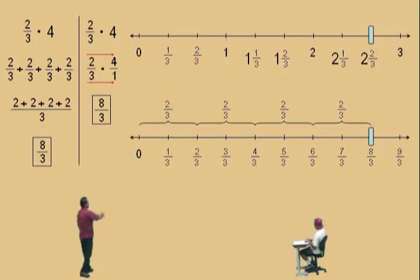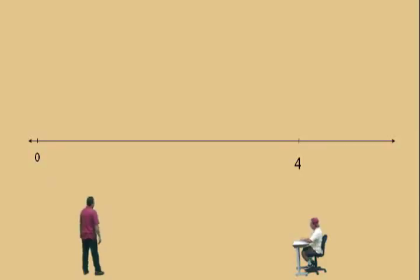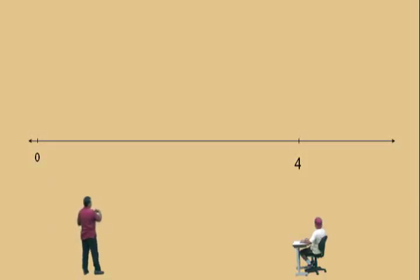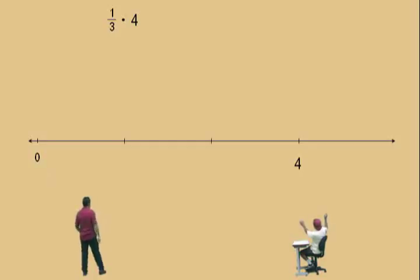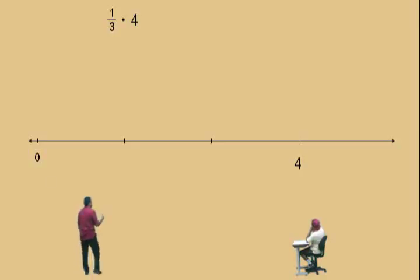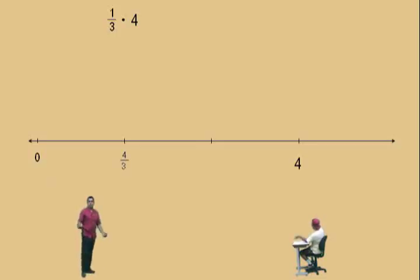Now in part 2 of this video, we're just going to do the arithmetic part, but in this video we're going to use some number lines. Let's go to another problem. Here is a number line — here's 0 and there's 4. Now we're going to look at 1 third times 4. Some people like to say this as a word statement: 1 third of 4. What is 1 third of 4? That means take 4 and break it up into 3 pieces. What do you think 1 third of 4 is, Charlie? 4 thirds. That's right — it is 4 thirds.